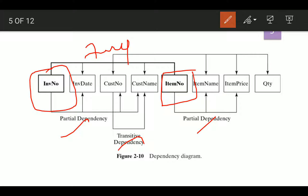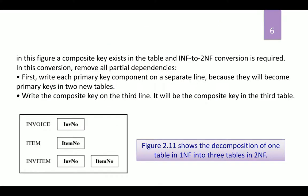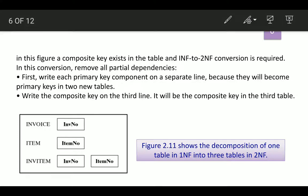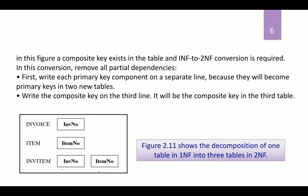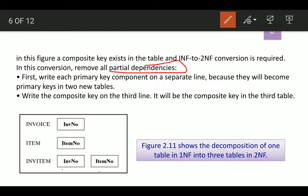In this figure, a composite key exists — invoice number and item number — which means the table is in first normal form. To convert to second normal form, two conditions must be met: the table must already be in first normal form, and there should be no partial dependencies. Since partial dependencies exist here, we have to remove all partial dependencies to convert the table into second normal form.